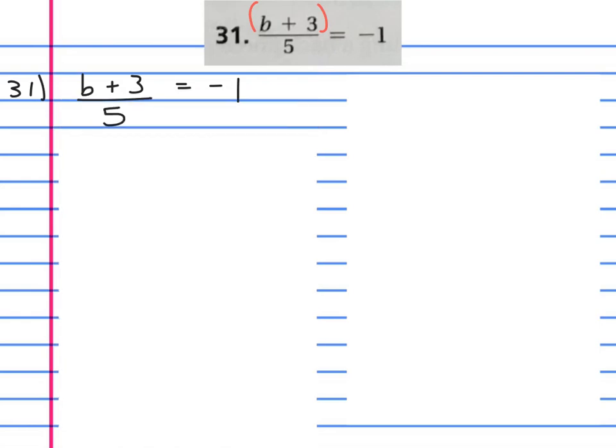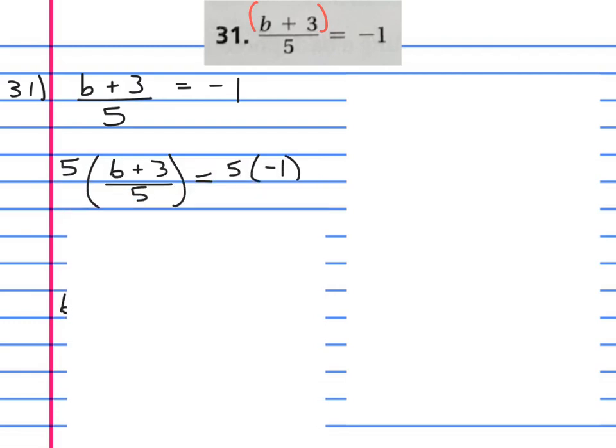Let's take a look. We've got our original problem untouched: b plus three over five equals negative one. What do we need to do? Because this is grouped and happening first in parentheses, the last thing that would happen would be divided by five. So the first thing we need to undo is the divided by five with times five.